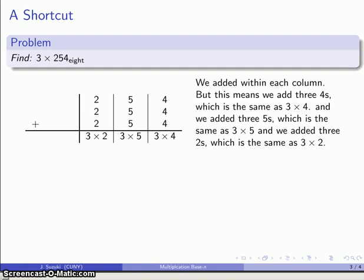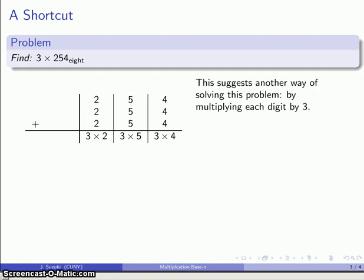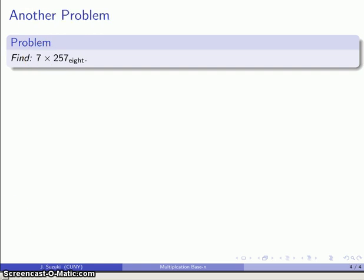And so that suggests another way we could approach the problem is just to multiply each of the digits in our number by 3. So let's take a look at how we might do that for a different problem. So this is 7 times 2 5 7 base 8. And again, what this is, is it's the sum of 7 2 5 7s.